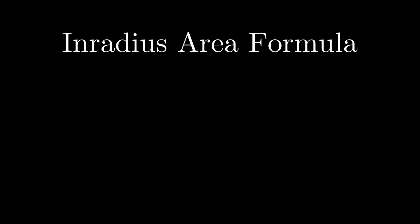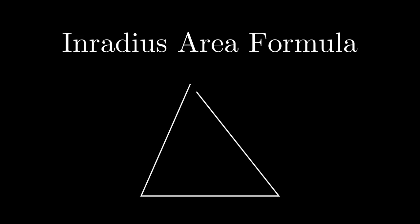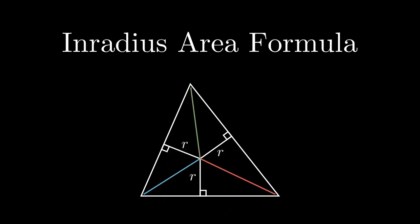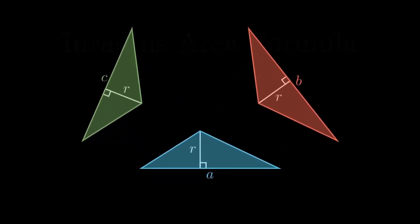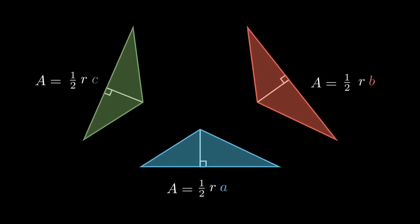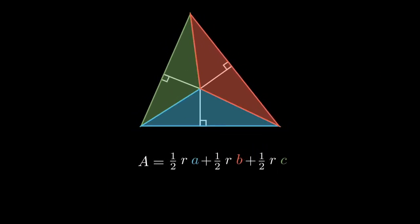The third formula is the in-radius area formula, which states that the area of a triangle is equal to the in-circle's radius times its semi-perimeter, where the semi-perimeter is one-half of the perimeter of the triangle, and the in-radius is the radius of the circle inscribed within the triangle, meaning the circle is tangent to all three sides of the triangle.